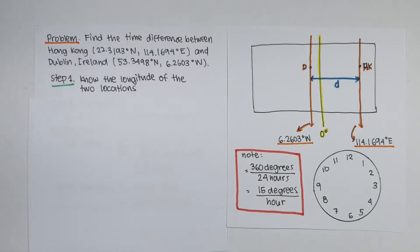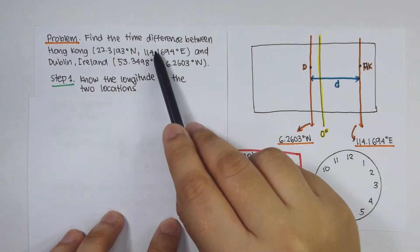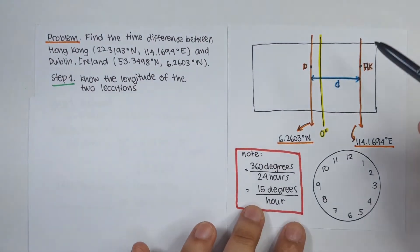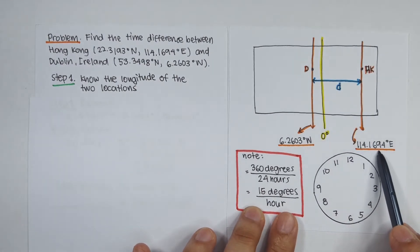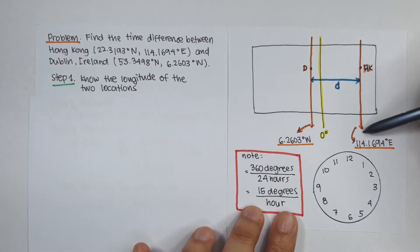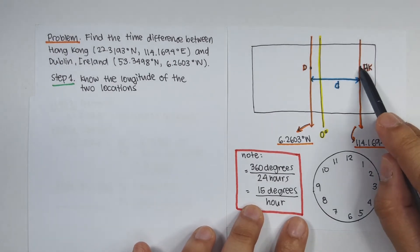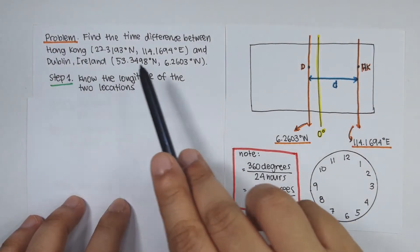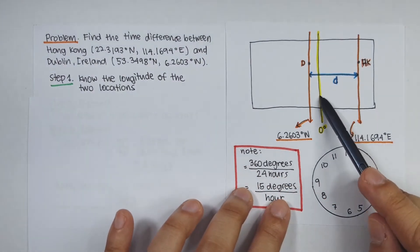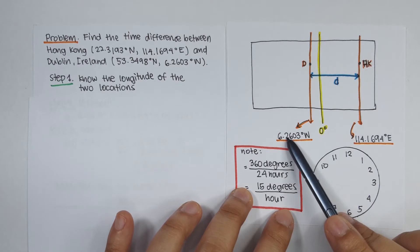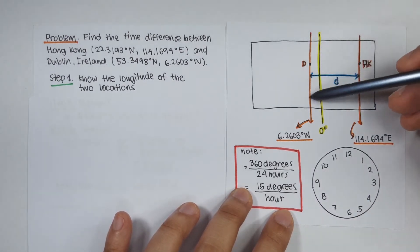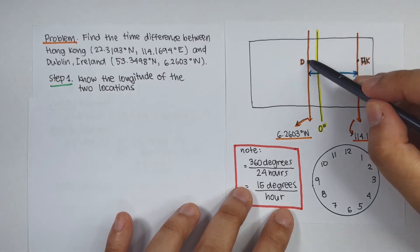Hong Kong is located at 114.1694 degrees east, so from the prime meridian you go 114.1694 degrees to the east — somewhere along this line is Hong Kong. Dublin, Ireland is located at 6.2603 degrees west, so from the prime meridian you go 6.2603 degrees to the west — somewhere along this line is Dublin.